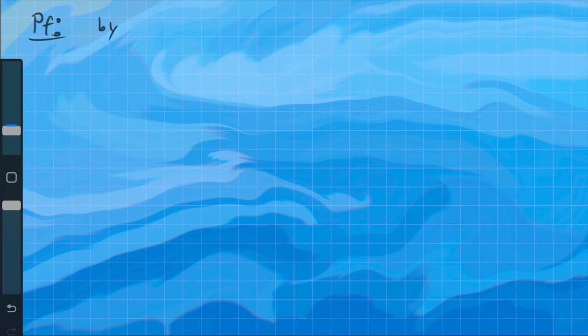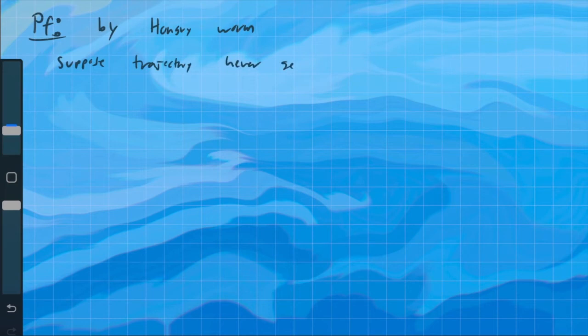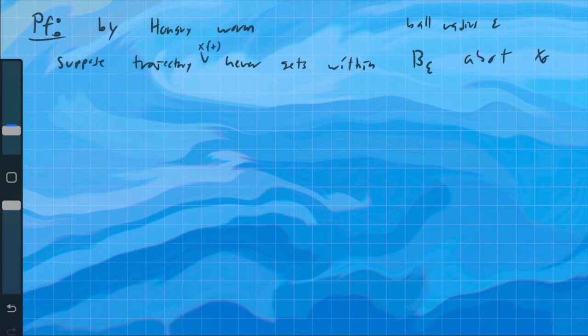Why is Poincaré recurrence true? Well, I'm going to use something I like to call proof by Hungry Worm. So suppose that the trajectory never gets within some region of the starting point. Let's call that B epsilon, where epsilon is just some number, a ball radius epsilon about x naught. Let's call the trajectory x of t.